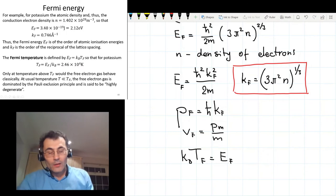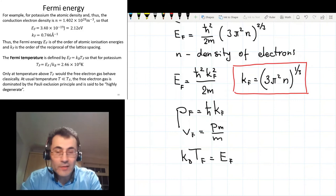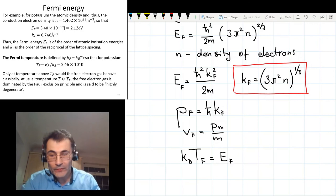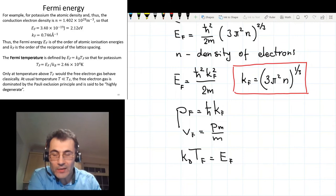Right, so the example in front of you on a slide on the left, top left corner, gives you a feeling for the values of Fermi energy, Fermi wave vector and Fermi temperature. In this case, we consider potassium, which is a monoatomic material, monoatomic metal, with the density of atoms 1.4 times 10²⁸ per cubic meter, which is the same as the number of electrons.